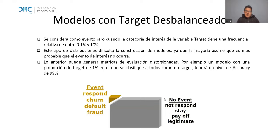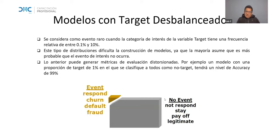Hay situaciones donde construimos modelos donde el target no necesariamente está desbalanceado. Cuando vendemos productos, por ejemplo, el 20% de los clientes acepta y el 80% no acepta. En ese caso, si queremos modelar esa tasa de aceptación del 20%, no necesitamos hacer un balanceo de datos, porque proporciones de 20-80, 70-30, 60-40, incluso 10-90, dependiendo de la cantidad de datos, siguen siendo proporciones válidas para modelar.